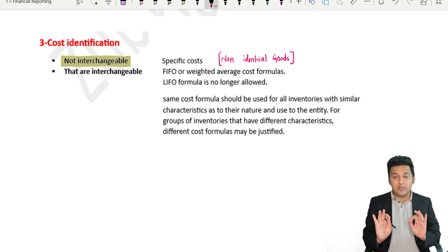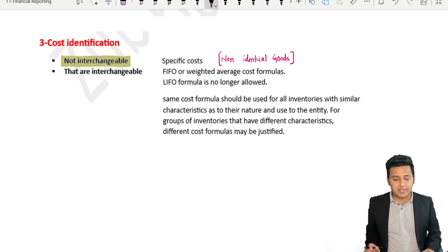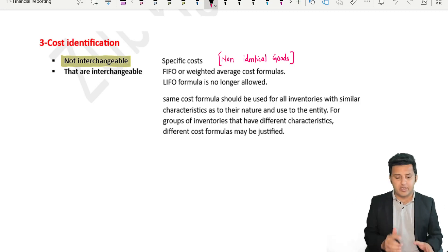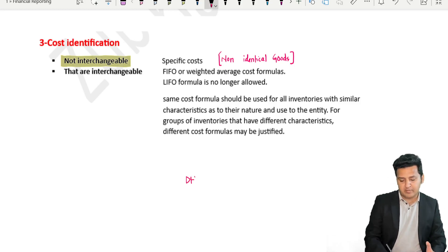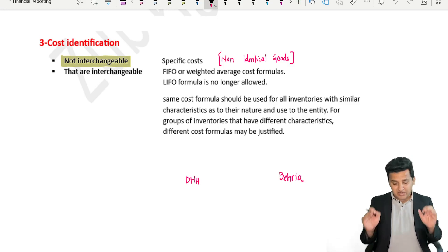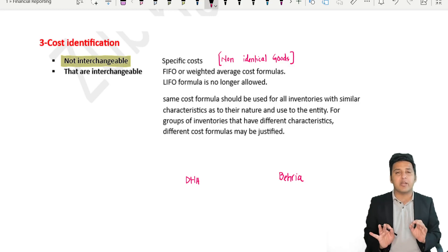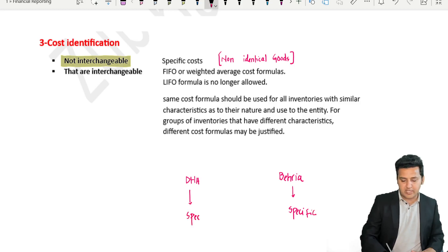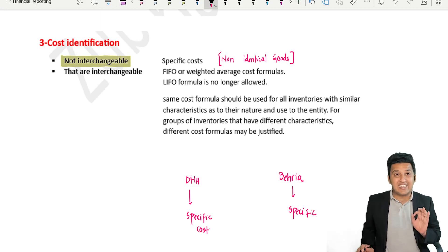For non-interchangeable goods, the specific cost of those goods is taken. For example, when we buy a house — when buying a house in DHA versus another area — we say specific cost. These are non-interchangeable goods and we apply specific cost.